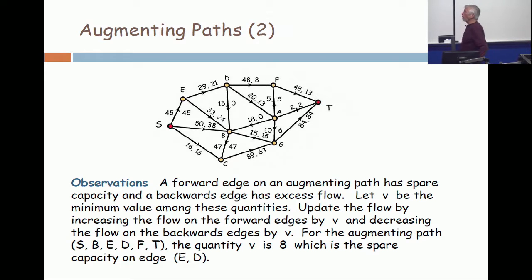We observe that if you have a forward edge on an augmenting path, it has spare capacity. You could increase the flow up to the capacity if you just look locally. Similarly, a backwards edge has excess flow. You can take stuff away. Now, you can't take away more than what's on the edge. So you have a whole bunch of constraints. Among these constraints, you take the most restrictive one. You're taking this minimum over all the spare capacities and all the excess flow. So let that be just some quantity V.